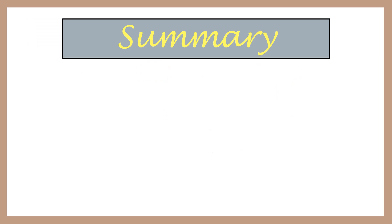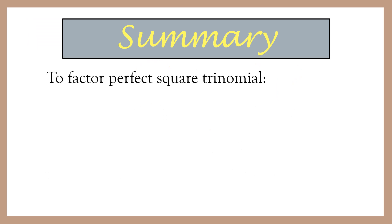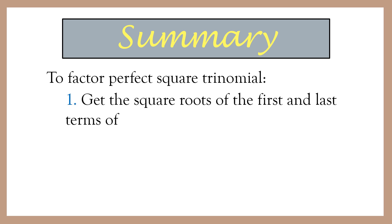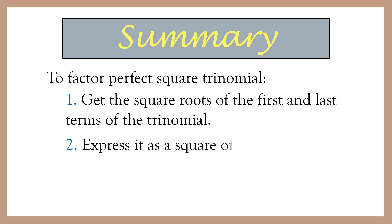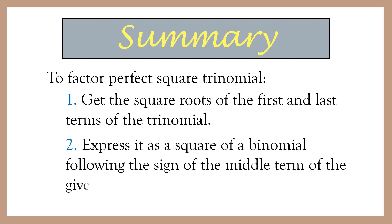Let us summarize what we have learned. To factor a perfect square trinomial: first, get the square roots of the first and the last terms of the trinomial. Second, express it as a square of a binomial following the sign of the middle term of the given trinomial.